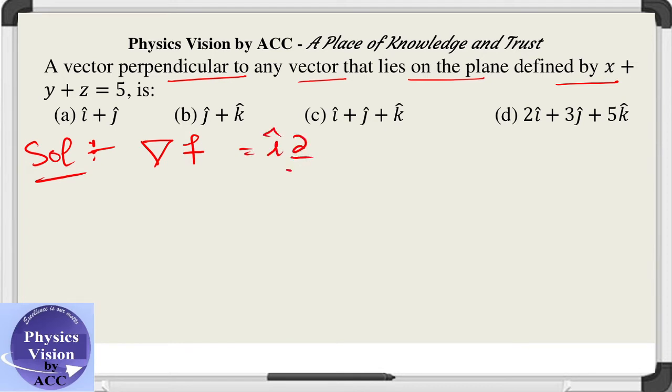We will take the gradient of this, which is i cap ∂/∂x plus j cap ∂/∂y plus k cap ∂/∂z of the given surface, which is given as x plus y plus z minus 5.